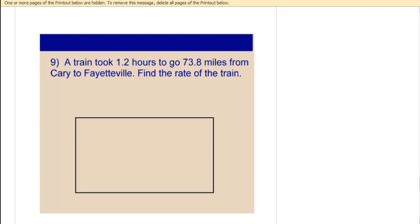So this reads that a train took 1.2 hours to go 73.8 miles from Cary to Fayetteville and we're asked to find the rate of the train. So what you want to do is work with what's called unit rate. And this is where we're going to be finding miles per hour.